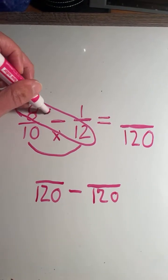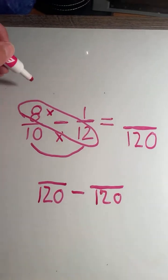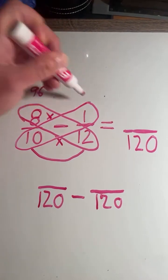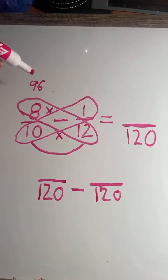So start off, we're going to multiply 8 times 12. 8 times 12 equals 96. 1 times 10 equals 10.